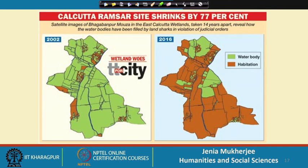Two images from 2002 and 2016 show how at a very fast scale Kolkata is losing her wetlands. What is more important is that the wetlands should not only be saved or protected for the sake of the wetland dwellers — it is very important to understand that the wetlands need to be saved also for the sustenance of the city.